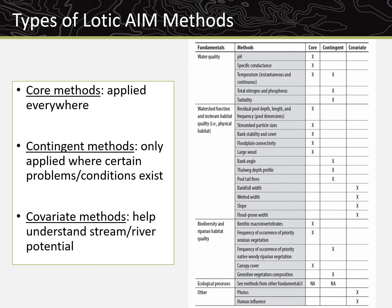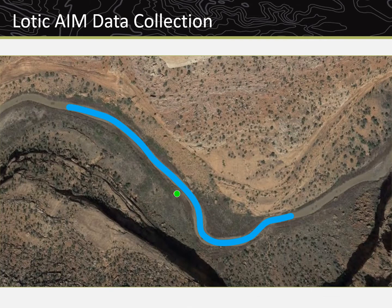The core, contingent, and covariate methods can also be organized by what component of stream health is assessed. In Table 1, the methods are organized by water quality, physical habitat, and biodiversity and riparian habitat quality, in addition to core, contingent, and covariate. Throughout this presentation, we will highlight example applications of the methods to these components of stream health.